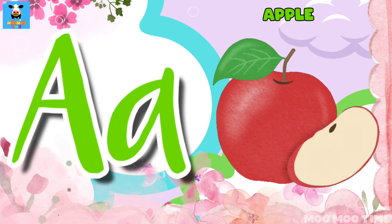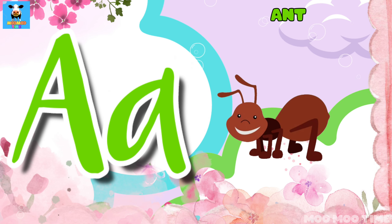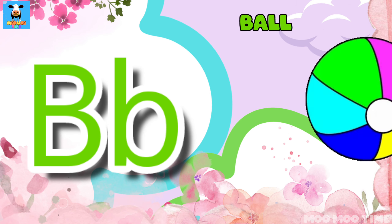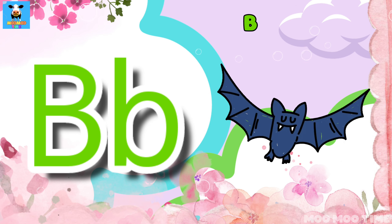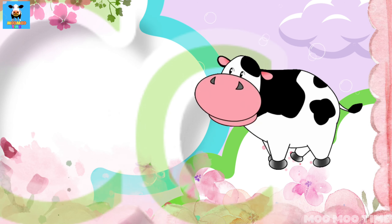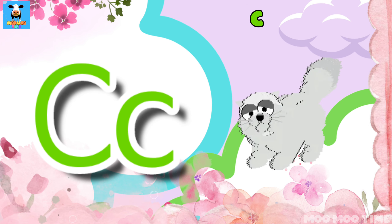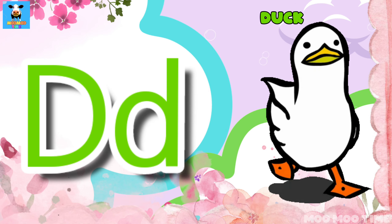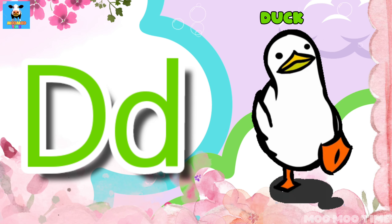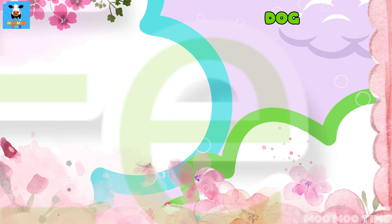E for Abu, E for Ant, E for Rent. D for Ball, B for Ball, B for Bat. C for Cow, C for Cat, C for Cut. D for Duck, D for Dog.